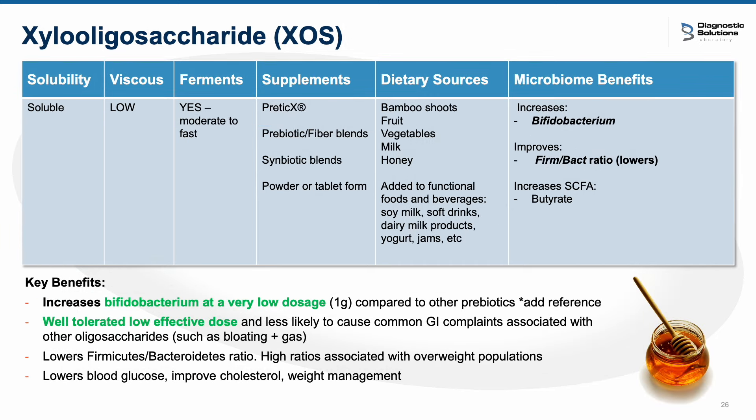The next prebiotic is xylo-oligosaccharide, or XOS, which you may see labeled as PRE-TIC-X in prebiotic formulas. This is a patented prebiotic XOS clinically demonstrated to increase Bifidobacterium in the colon of both healthy and overweight individuals. It has also been shown to improve the Firmicutes-to-Bacteroidetes ratio. Where XOS shines is it can increase Bifidobacterium at much lower doses compared to other oligosaccharides, and it seems to be very well tolerated and effective at low doses.